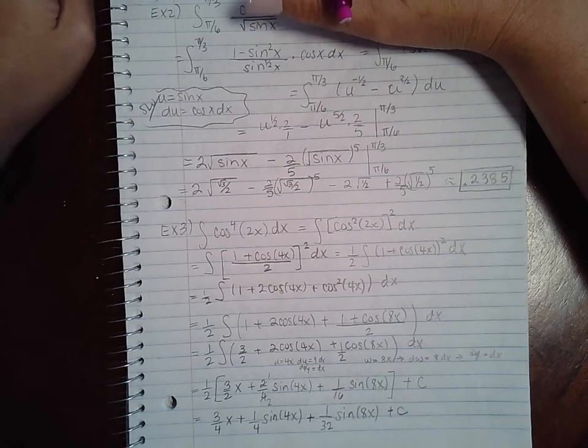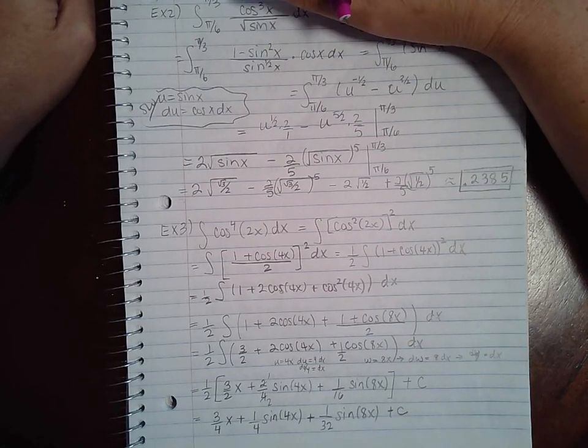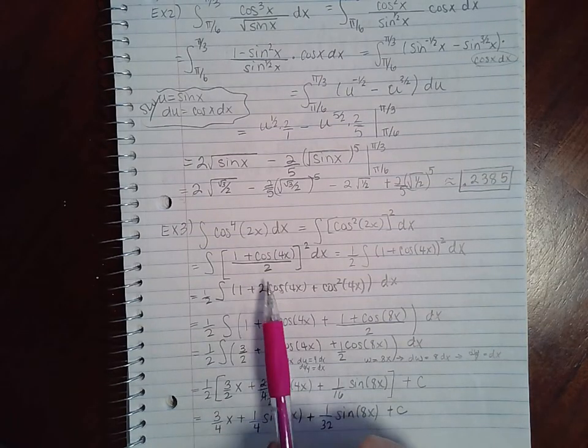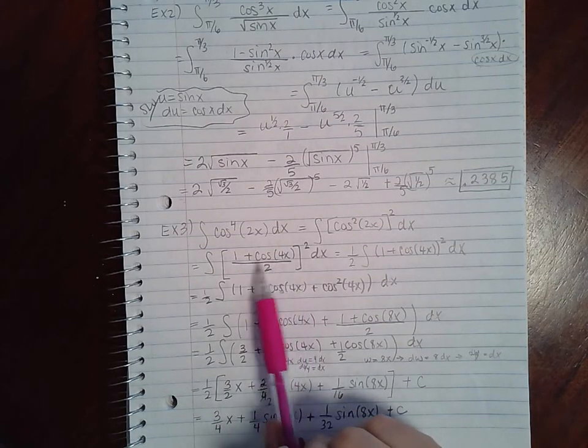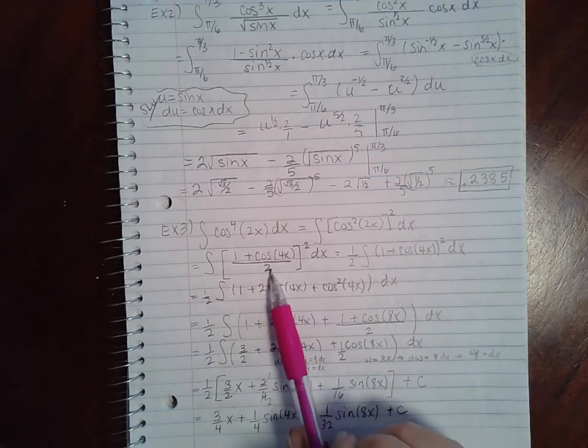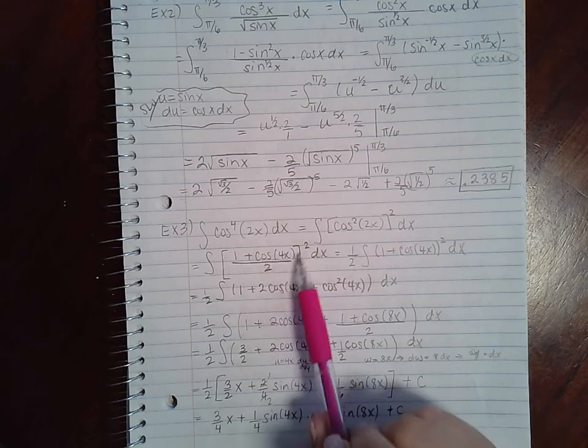And actually, I believe I noticed an error in my problem as I was looking back over this. Remember when we squared this? We went ahead and took the numerator off to the side and squared that, but this two in the denominator also should have been squared.